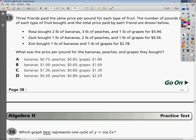So essentially what the first one would look like for Rosa is 2B, and we'll call it B, it could be X, it doesn't matter, plus 3P plus 1G is equal to $5.94. Zach's would be 1B plus 2P plus 1G equals $4.56, and Kim's would be 1B plus 1G equals $2.78.